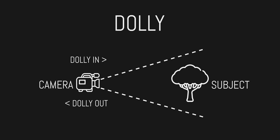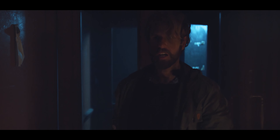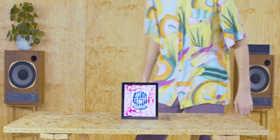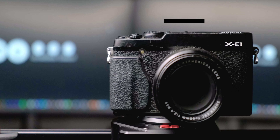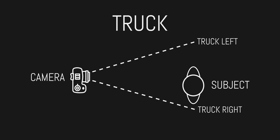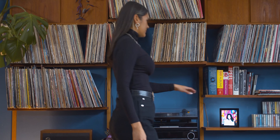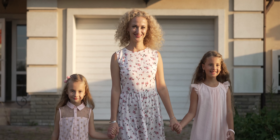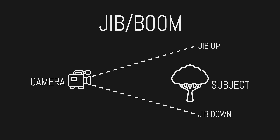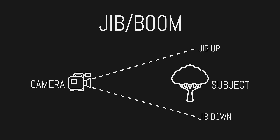These can also be called a push-in or a pull-out, and this moves the camera physically closer to or further away from the subject. Truck shots are very similar to a dolly in or a dolly out, except the camera is moving left or right. Truck shots and dolly shots are both examples of tracking shots, where the camera follows the motion of the subject. Jib shots, also sometimes called boom shots, are where the camera moves vertically up or down.